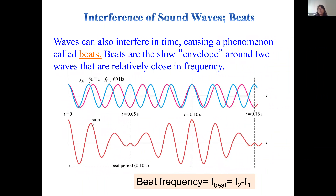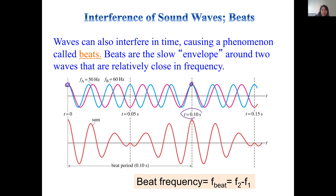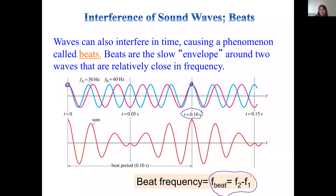Interference of waves also creates beats. When two waves of very close but different frequencies are combined, you observe periodic amplitude variations — the beat. The beat frequency is calculated as the difference between the two frequencies: f_beat = |f1 - f2|.